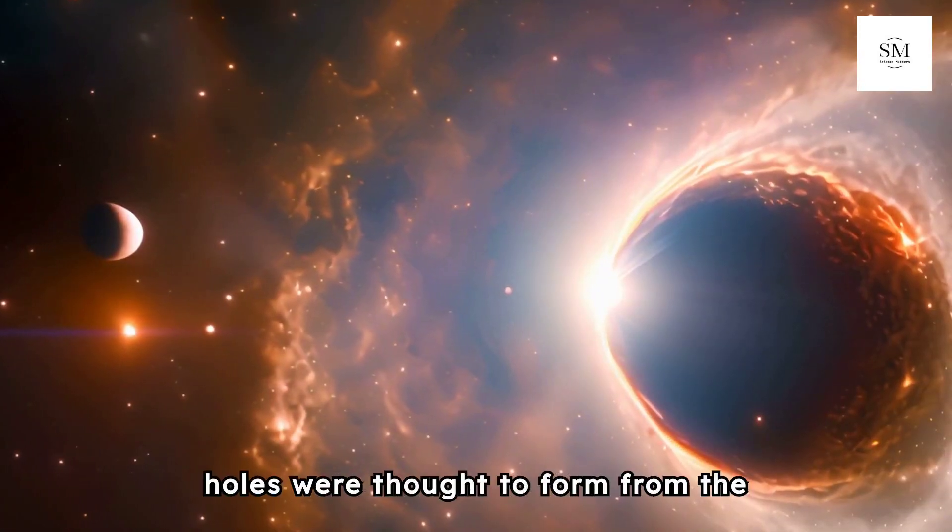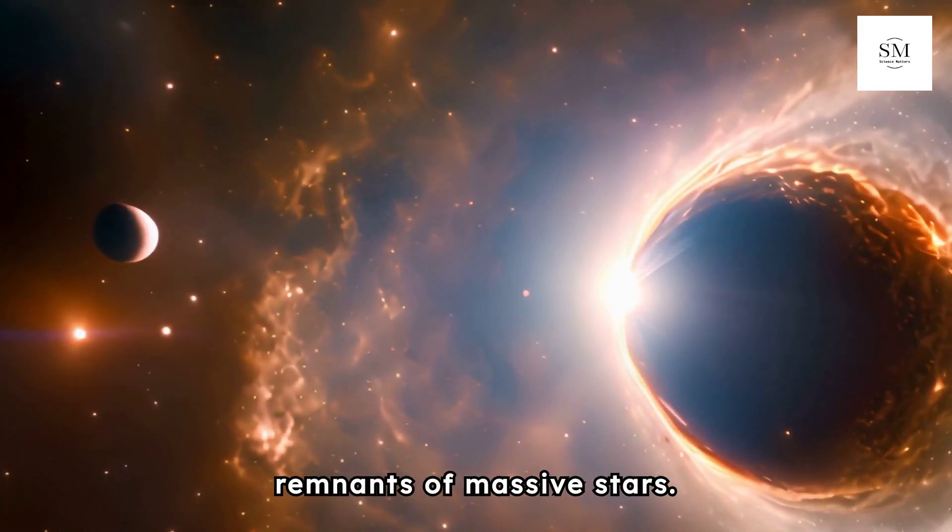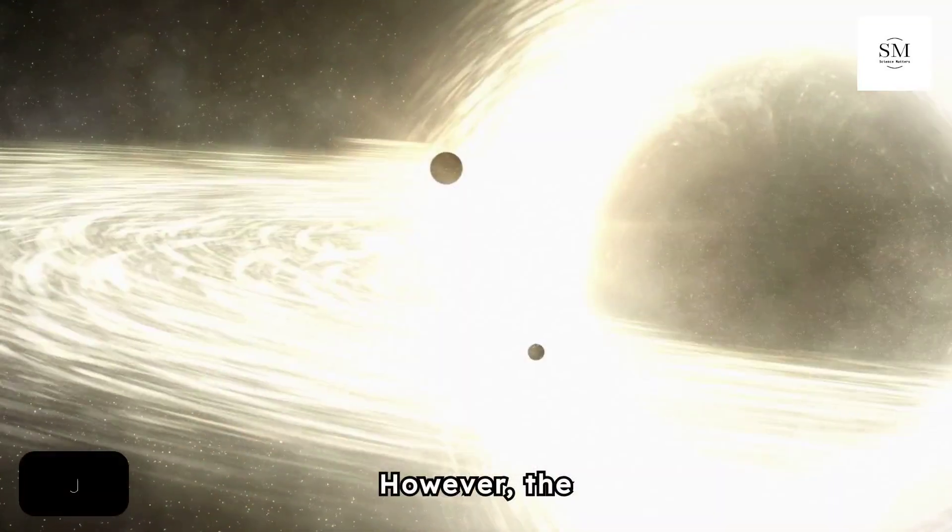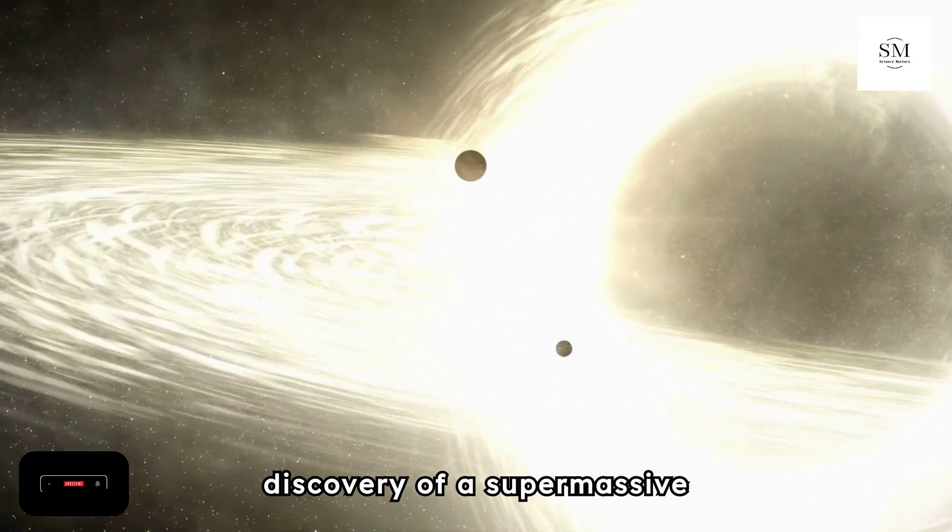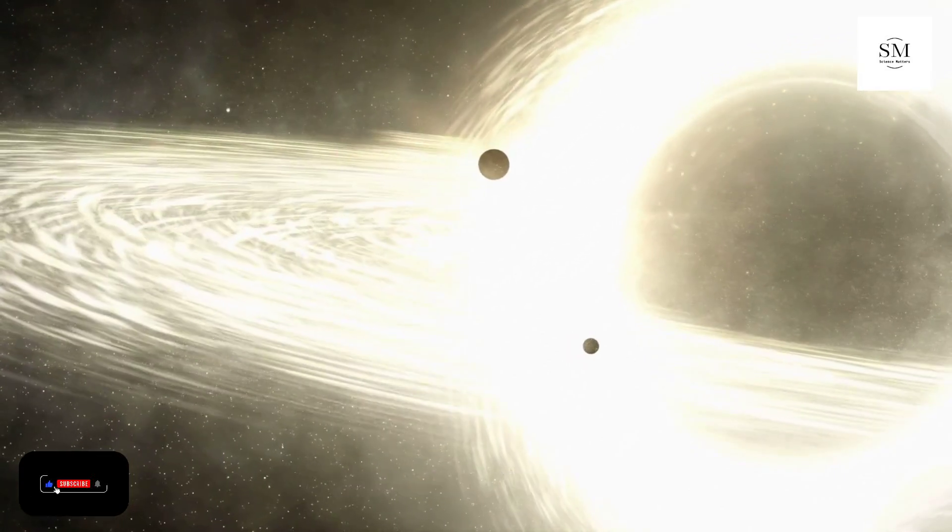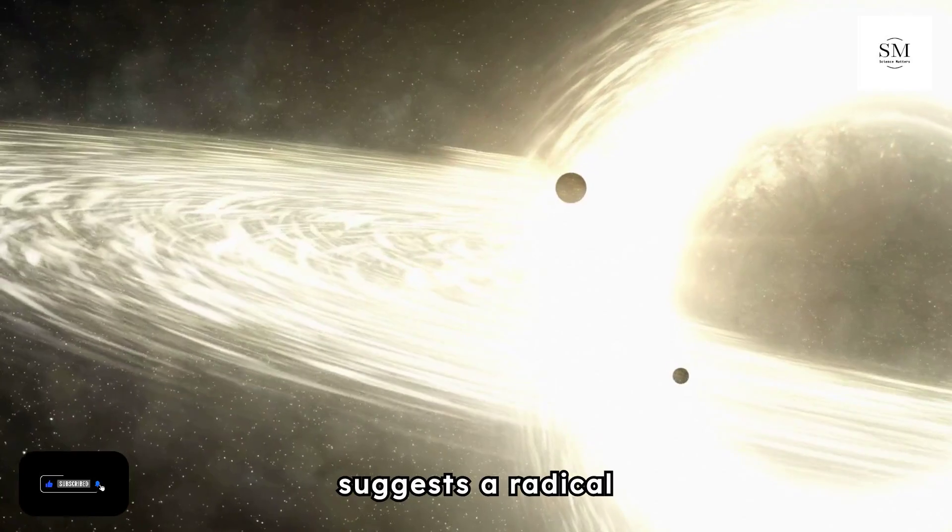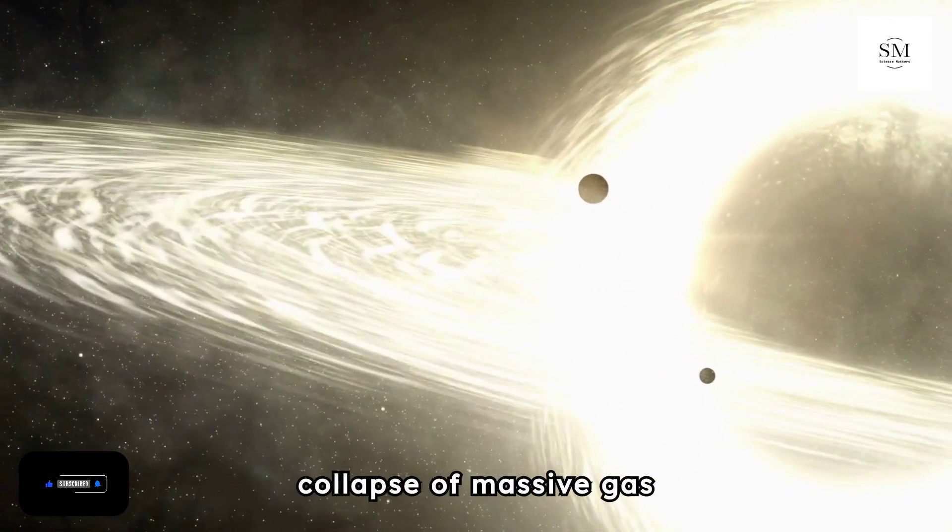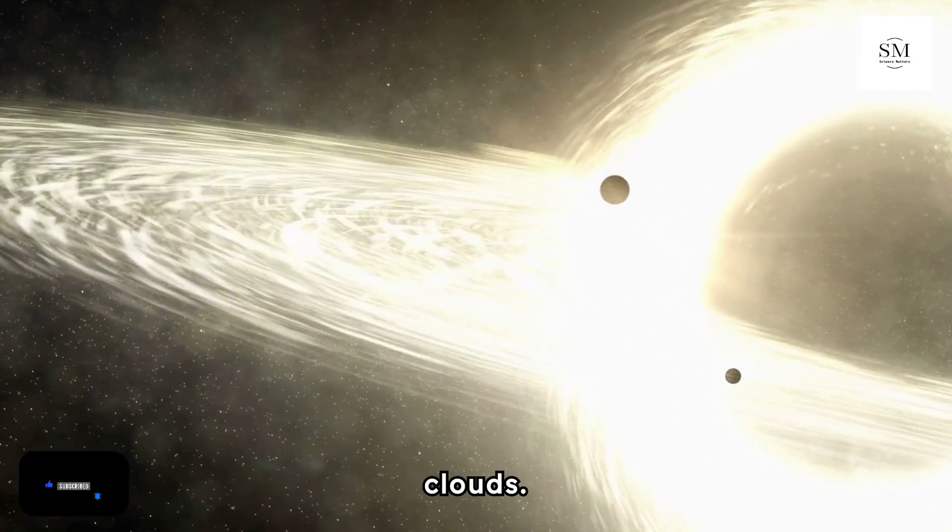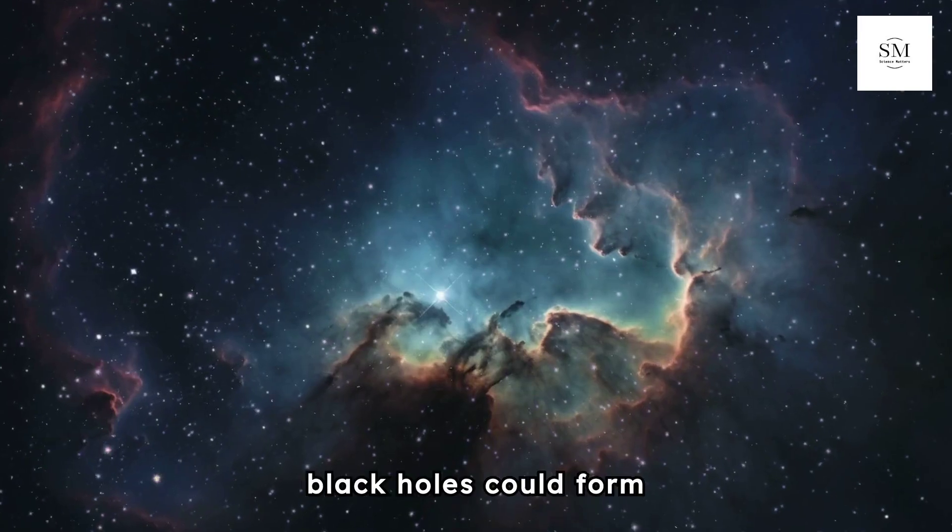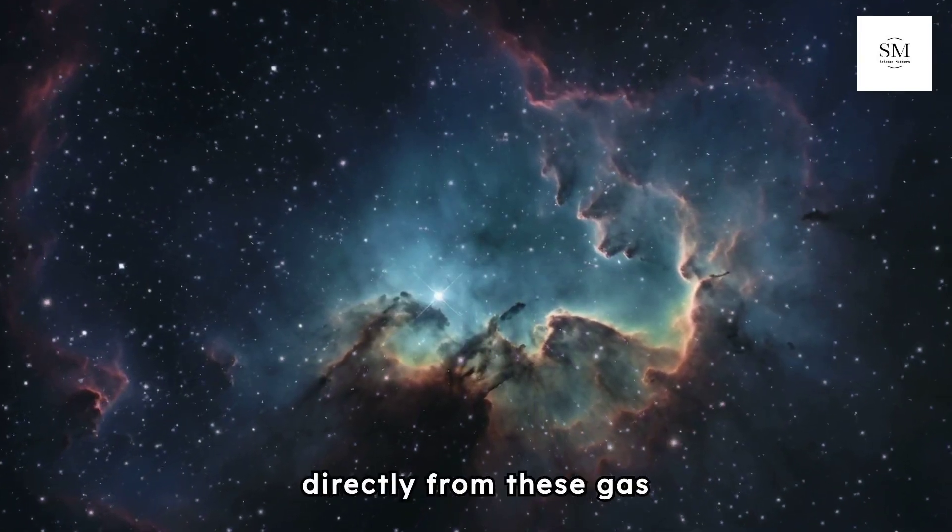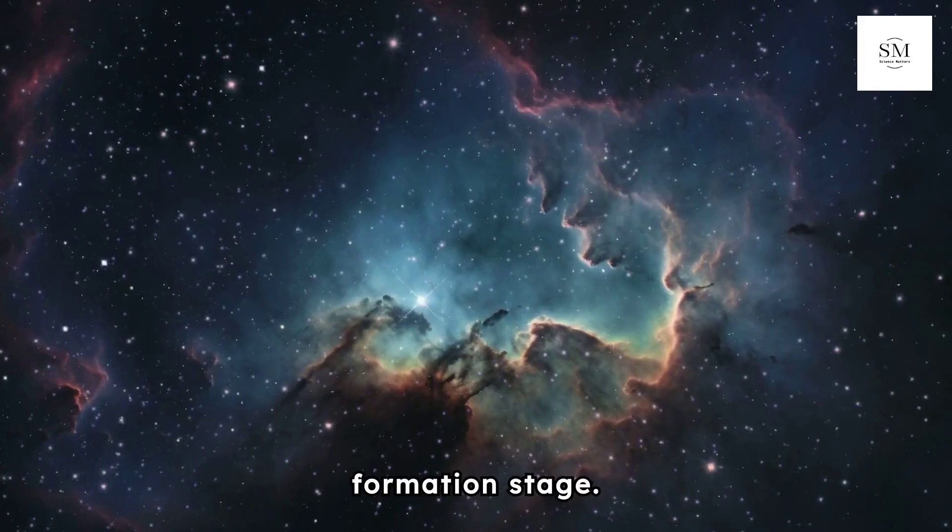Traditionally, black holes were thought to form from the remnants of massive stars. However, the discovery of a supermassive black hole formed just 740 million years after the Big Bang suggests a radical alternative, the direct collapse of massive gas clouds. This theory posits that black holes could form directly from these gas clouds, bypassing the star formation stage.